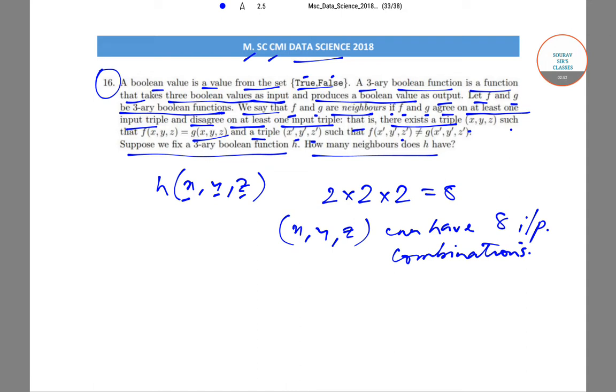Because for neighbor you have to agree on at least one and disagree on at least one input triple. So therefore, number of neighbors...